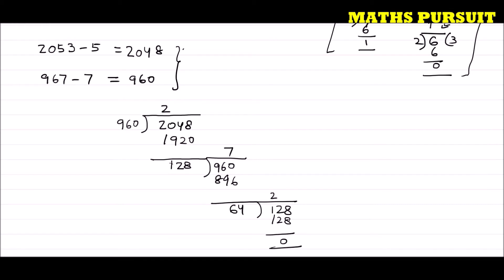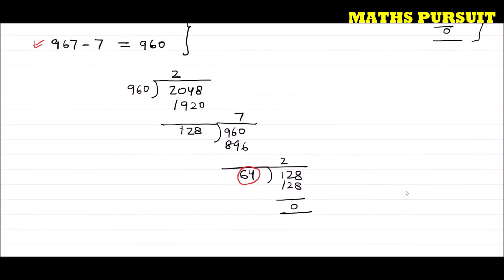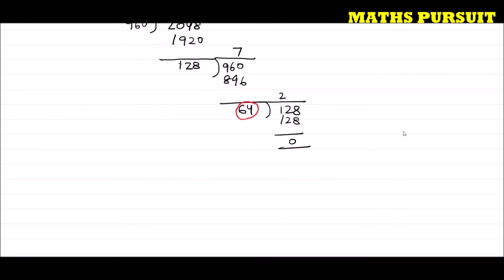As per Euclid's division lemma, the last non-zero divisor is the highest common factor. So 64 is the largest number which when it divides 2053 and 967 will give remainders of 5 and 7 respectively. Let us now test this.